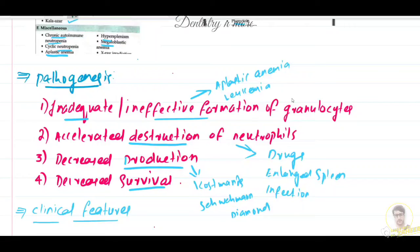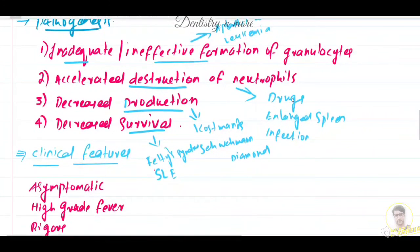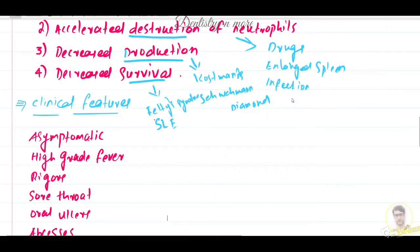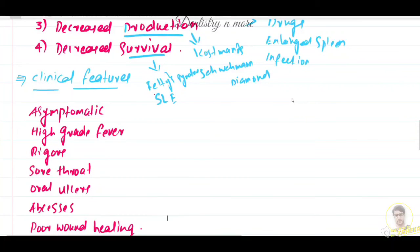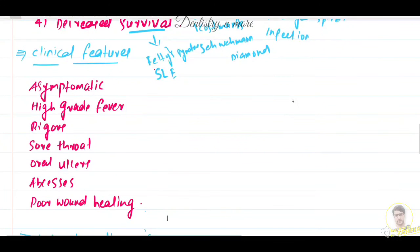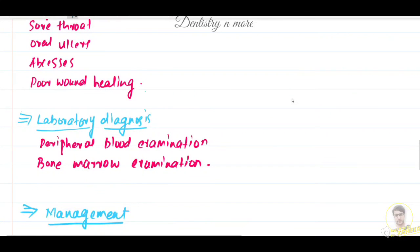Decreased survival is associated with Felty's syndrome, autoimmune neutropenia, SLE, and some drugs. Regarding clinical features, it depends upon the degree of neutropenia and most commonly it is asymptomatic. Symptoms can include high-grade fever, rigors, sore throat, oral ulcers, abscesses, and poor wound healing. Lab diagnosis is mostly by blood smear examination and bone marrow examination.